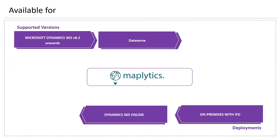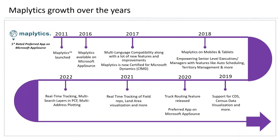Maplytics works within Dynamics CRM and is available for online, on-premises, and Dataverse as well. Maplytics has been around for more than a decade — we started in 2011 as a store locator and developed it further based on customer requirements and valuable feedback from customers and partners. As we grew, we added proximity search, routing optimization, territory management, and many more features over the period.